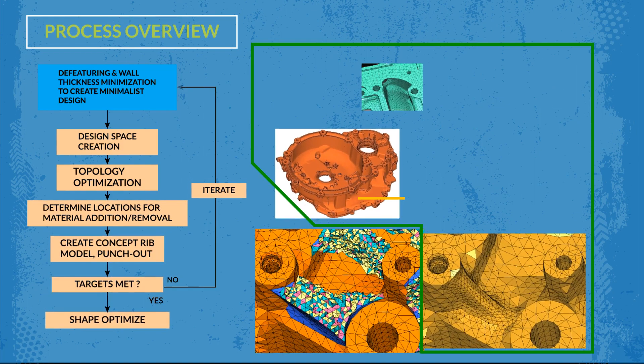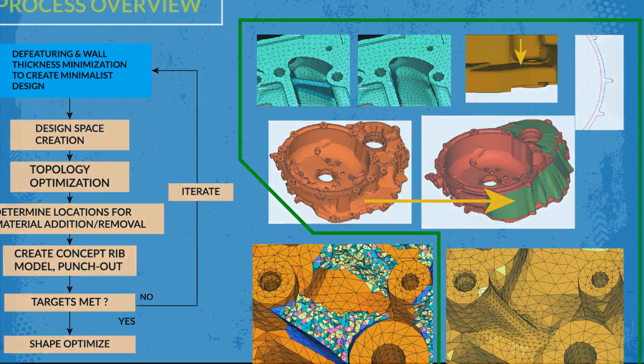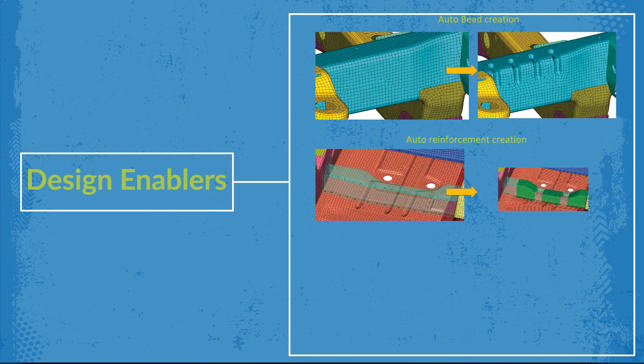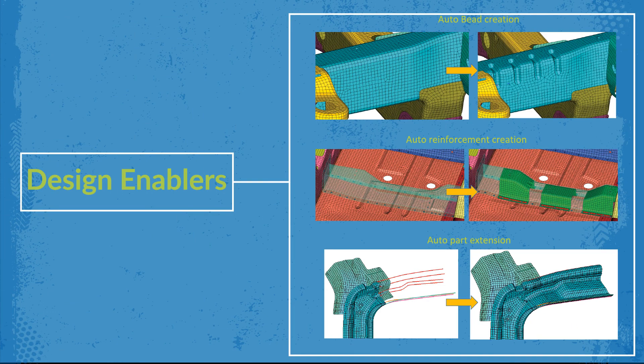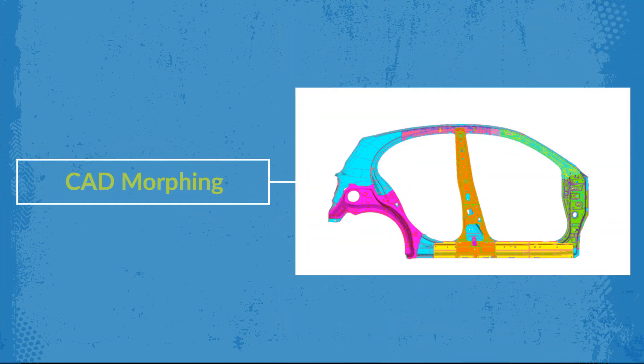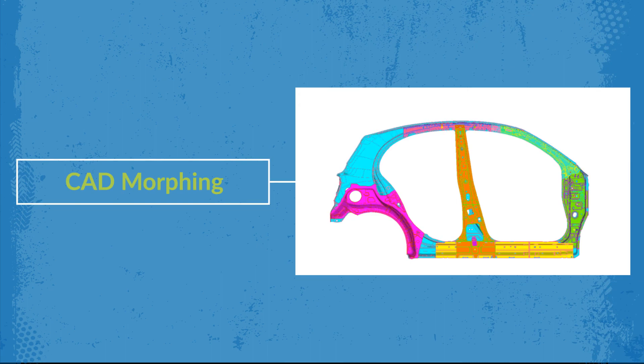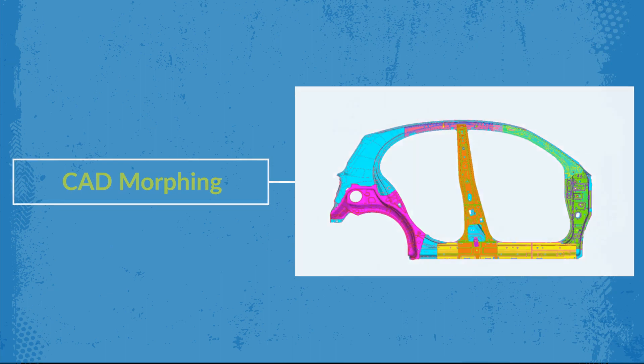Design enabling: automatically create typical design solutions required to improve structural and CFD performance and reduce weight. CAD morphing: morph existing CAD data, body structures, powertrain, and chassis parts, directly to new shapes.